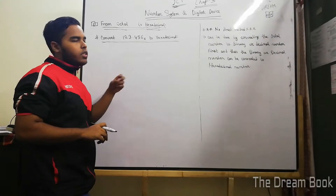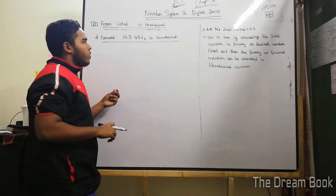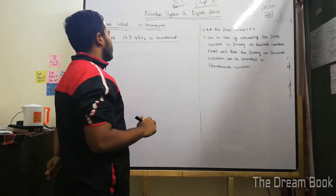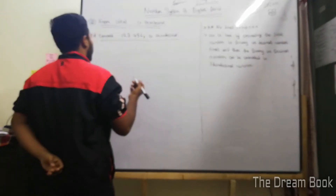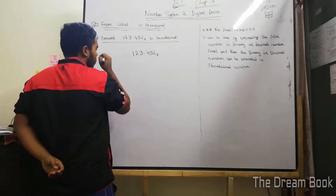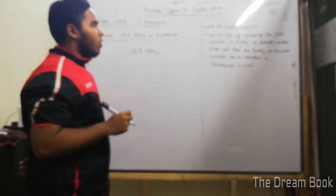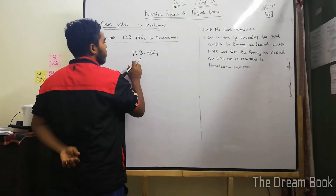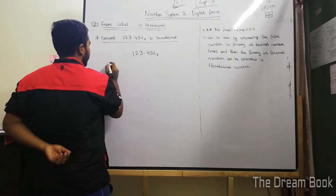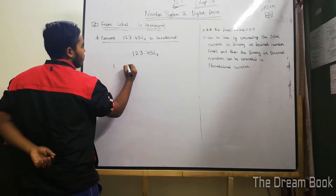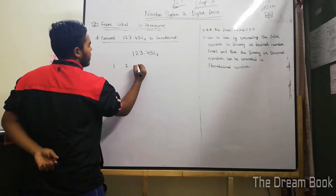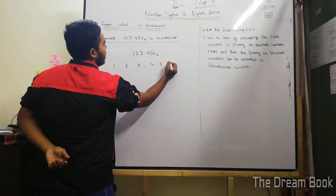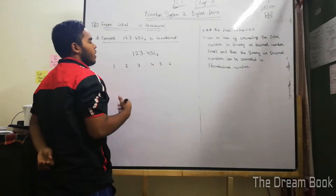We have to convert to binary, then we have to convert to hexadecimal. So let's see how we can convert this. We have to convert the octal to the hexadecimal. First of all, we have to separate each digit. Then we will be able to do the conversion.